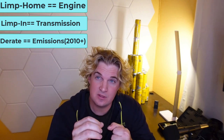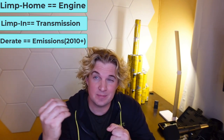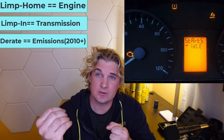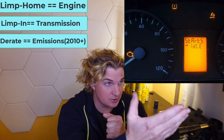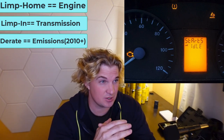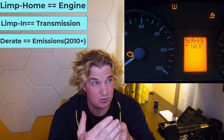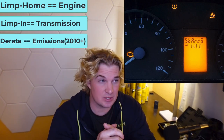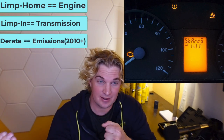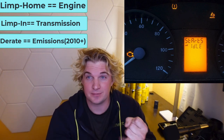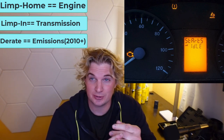Next we have derate mode, which is an emissions-related issue. Basically, your van's computer thinks there might be something wrong with your emissions, so it decides to limit your speed to 5 miles per hour. Your dash will read something like 'starts left: zero' or 'starts left: idle.' The defining characteristic is you won't be able to go above 5 miles an hour, even though you have a perfectly healthy engine and transmission.